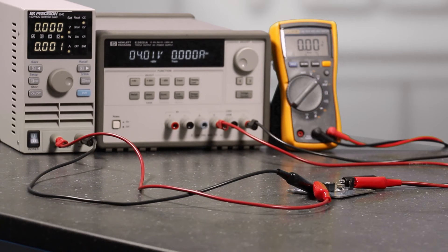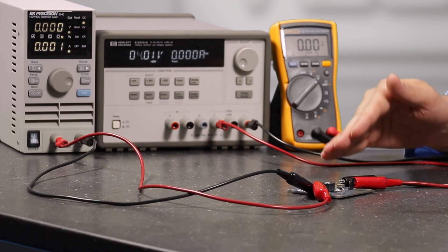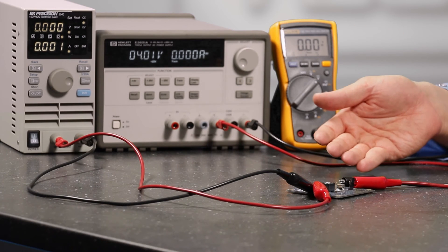Beyond undervoltage lockout, it has all the other standard protections you'd expect, including overcurrent protection, overvoltage protection, and thermal shutdown. To help with the thermal aspect, the underside of the package has a thermal pad which helps pull heat out.